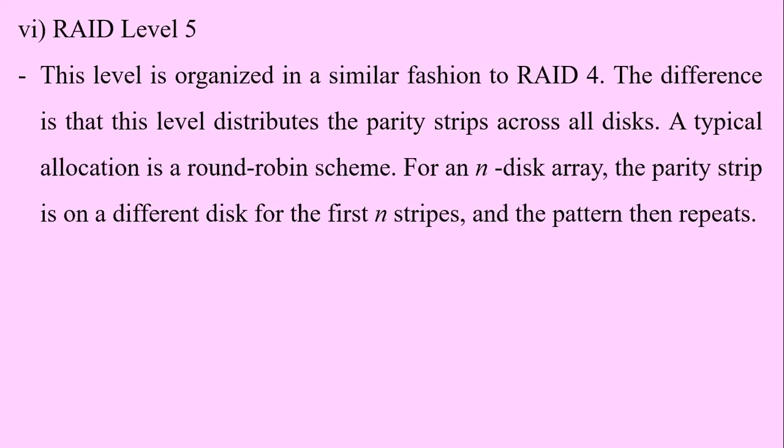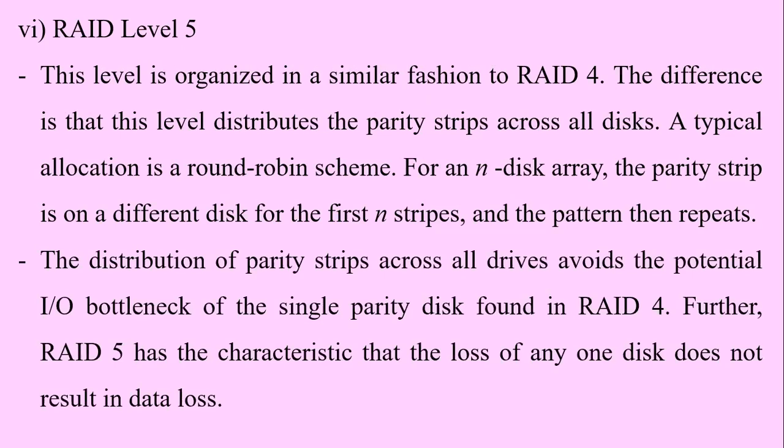RAID level 5 is organized in a similar fashion to RAID level 4. The difference is that this level distributes the parity strips across all the disks using a typical round-robin scheme. For an N-disk array, the parity strip is on a different disk for the first N strips, and then the pattern repeats. The distribution of parity strips across all drives avoids the potential I/O bottleneck of the single parity disk found in RAID level 4.